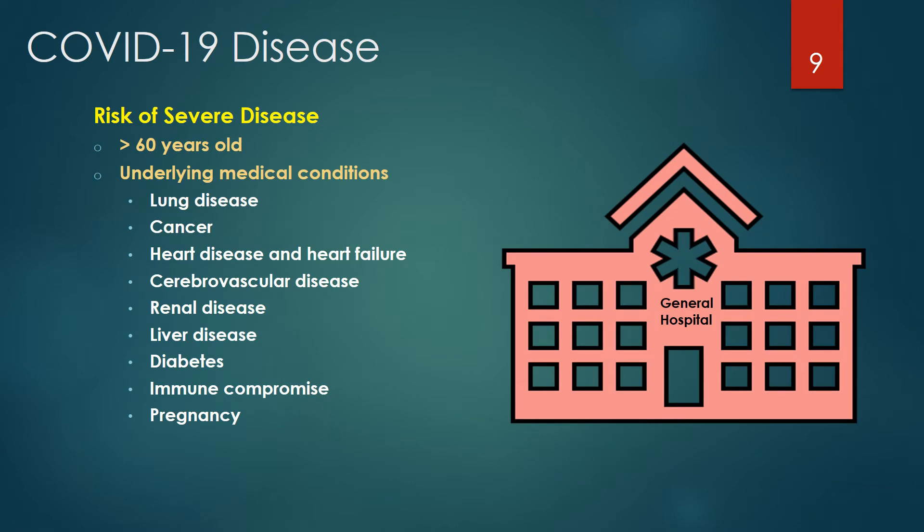Individuals who are elderly, over 60 years of age, and any individuals with certain underlying medical conditions are at greater risk of severe disease. Though the elderly are at greater risk, severe illness is also seen in young people. Underlying medical conditions that place a person at greater risk include lung disease, cancer, heart disease and heart failure, cerebrovascular disease, renal disease, liver disease, diabetes, immune compromise, and pregnancy.